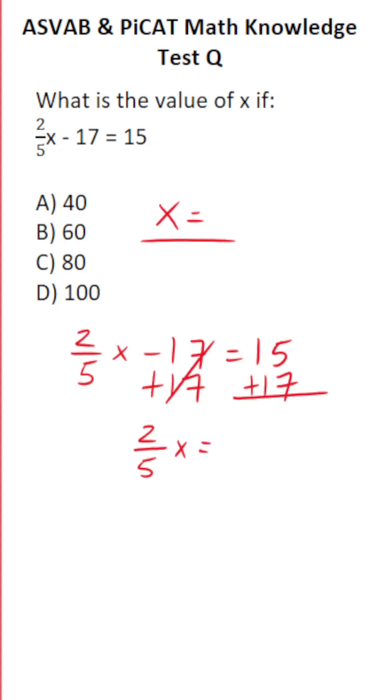17 plus 15, if you can't do it mentally do it off to the side. 5 plus 7 is 12, carry a 1. This is 3, so this is 32.